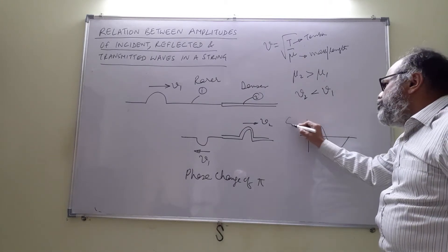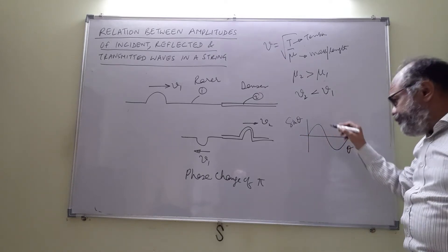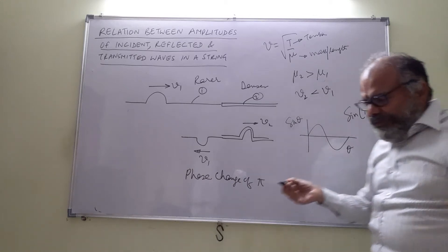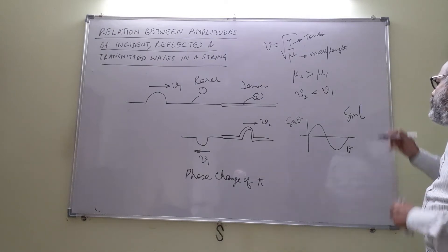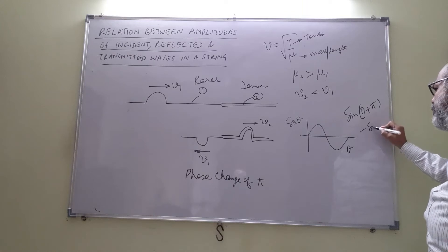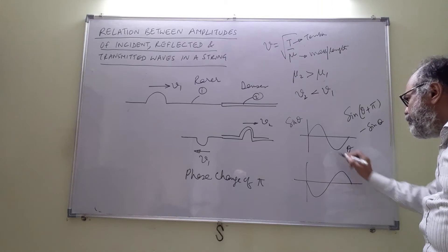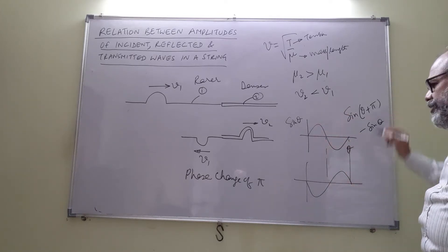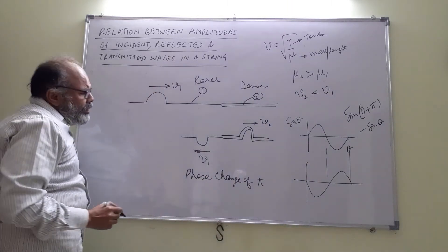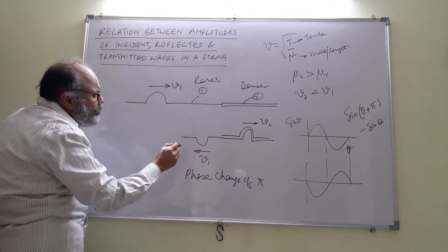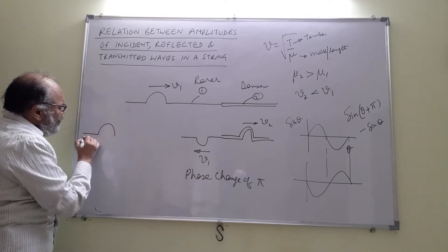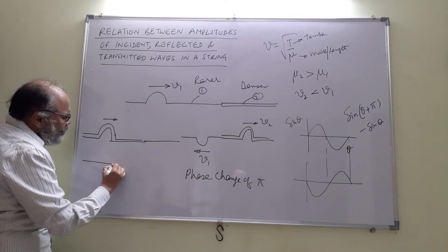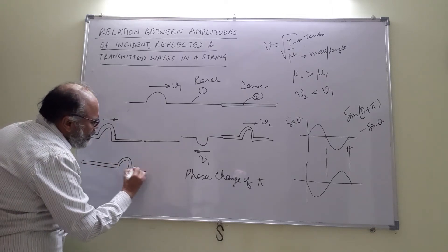Suppose you plot sin θ versus θ for a single cycle. Let us try to plot sin(π + θ), that is, sin undergoing a phase change of π. Sin(θ + π) equals minus sin θ, so the graph would be reversed like this. Anything that gets inverted like this, we say there is a phase change of π. The interesting thing to note is that if the incident wave or pulse were in a denser medium and it encounters a rarer medium, then the reflected wave does not suffer an inversion — there is no phase reversal of π.